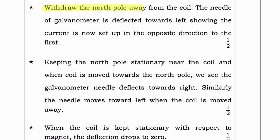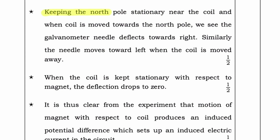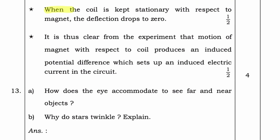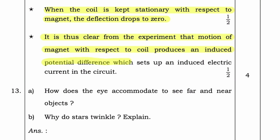Then withdraw the north pole away from the coil — the needle of the galvanometer is deflected towards the left, showing the current is now set up in the opposite direction. Keep the north pole stationary near the coil and when the coil is moved towards the north pole, we see the galvanometer needle deflects towards the right. Similarly, the needle moves towards the left when the coil is moved away. When the coil is kept stationary with respect to the magnet, the deflection drops to zero. Thus, the experiment shows that motion of the magnet with respect to the coil produces an induced potential difference which sets up an induced electric current in the circuit.